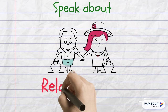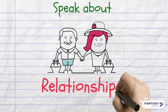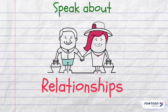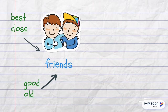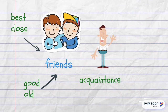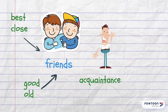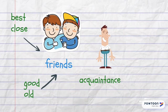Hello everybody, welcome back to my channel. Today we're speaking about relationships. It's great to have friends — you may have a best friend, close friends, good or old friends. And if you can't say that the person is your friend, just someone who you know, that is your acquaintance.